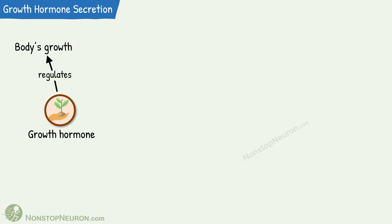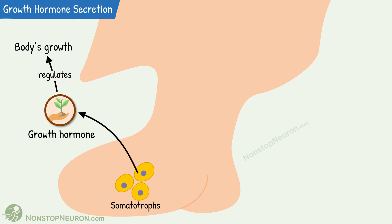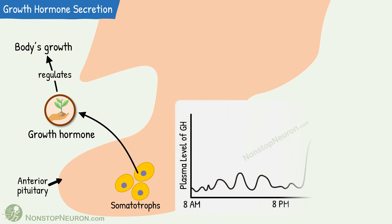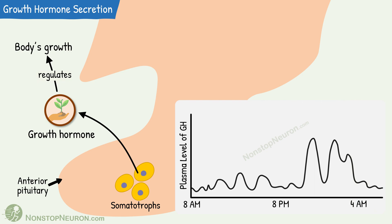Growth hormone is a major regulator of the body's growth. It is released from somatotroph cells in the anterior pituitary gland. A peculiar thing about growth hormone release is that it occurs in pulses. If we measure plasma levels throughout the day, we would find maximum levels during night, because its release is maximum during early hours of sleep, and more than 70% of total daily growth hormone release occurs during slow wave sleep.